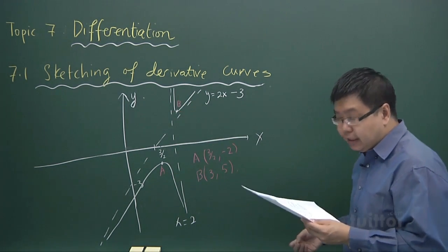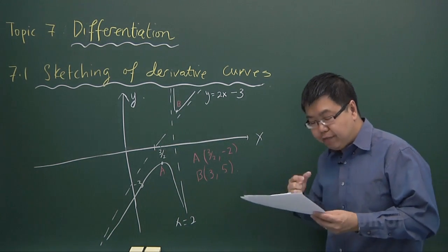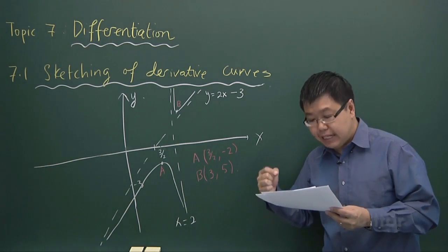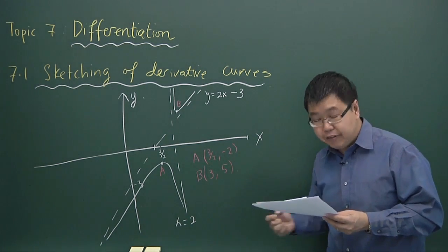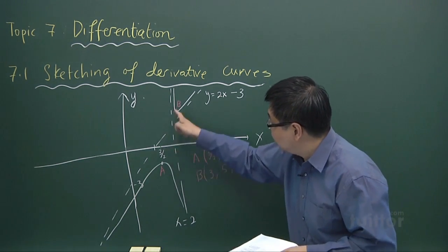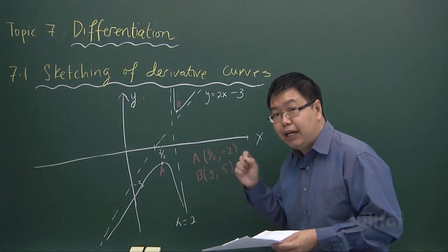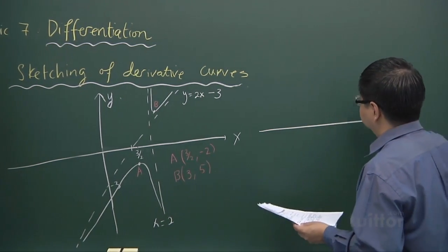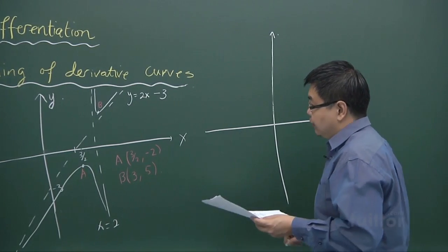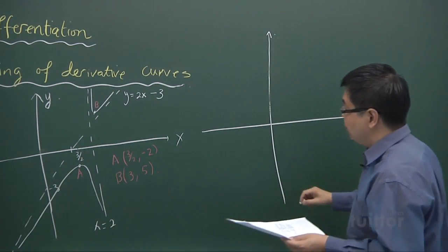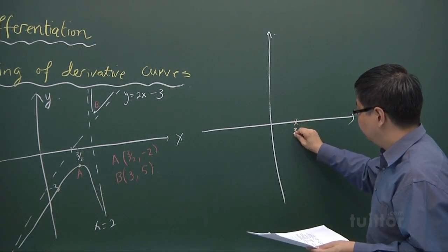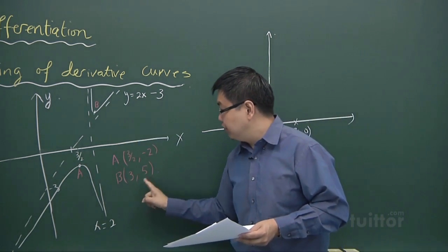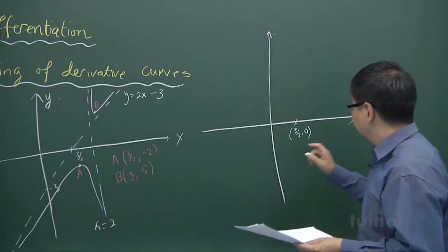The first rule of your table says that when f(x) has a stationary point at x equals a, it becomes the x-intercept for the derivative graph. So these two points A and B are the stationary points, so they become x-intercepts. Point A, which is (3/2, −2), becomes (3/2, 0), and point B, which is (3, 5), becomes (3, 0).